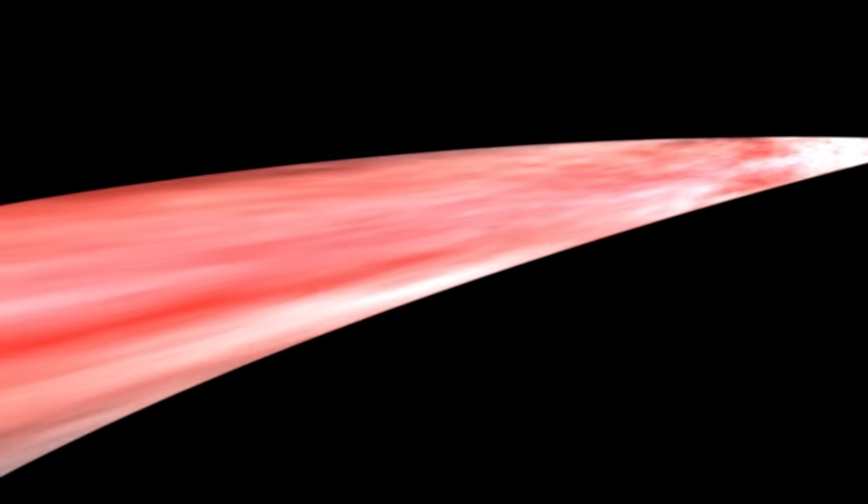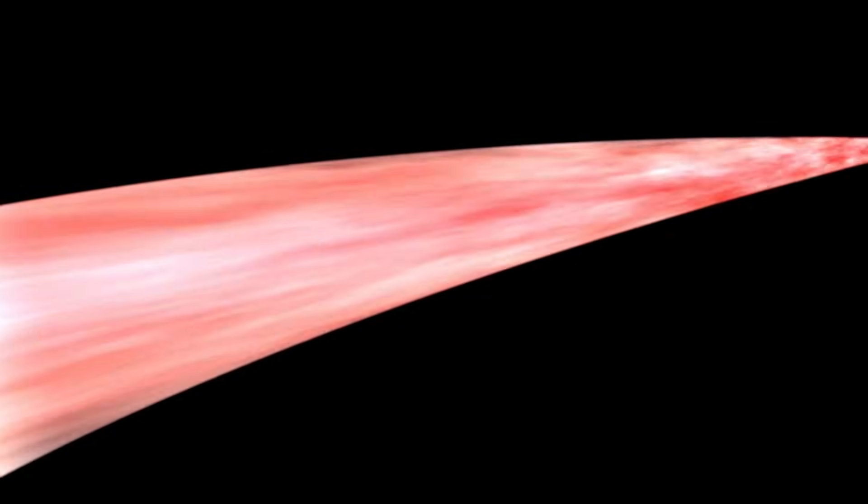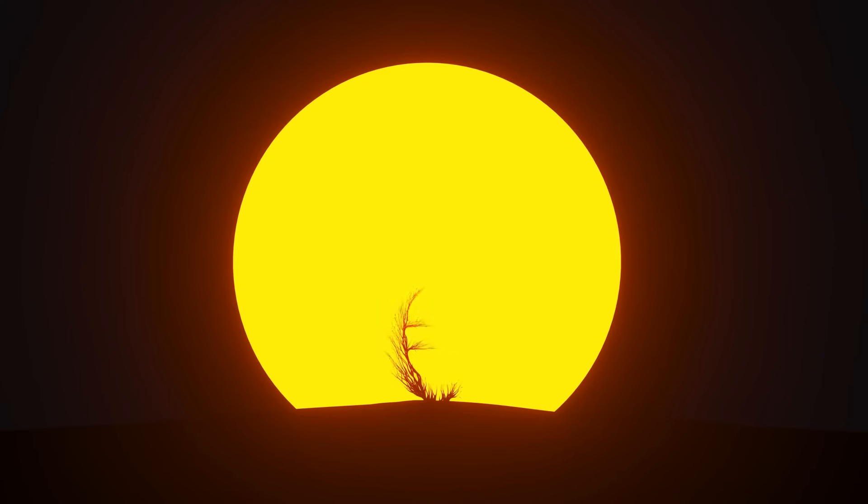What makes this even more compelling is that the discovery of Alcyonius wasn't part of a deliberate search. Instead, it was a fortunate accident, an unexpected revelation buried in the data. Based on current scientific estimates, Alcyonius may in fact be the largest known galactic structure in the observable universe.